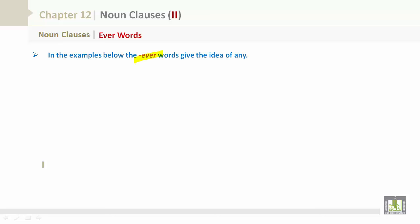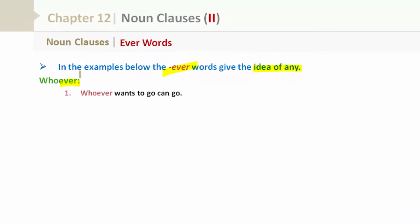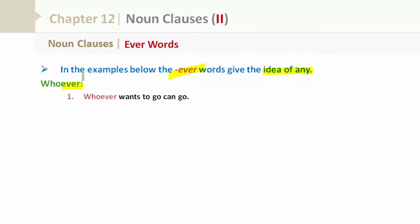Ever words. I really want you to take a look at the examples below containing the ever words, which give the idea of any. So let's take a look at whoever. This is an ever word because it ends in ever. Example one: Whoever wants to go can go. Number two: Anyone who wants to go can go.